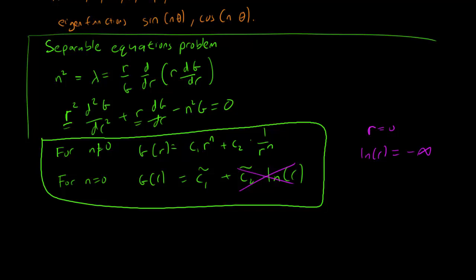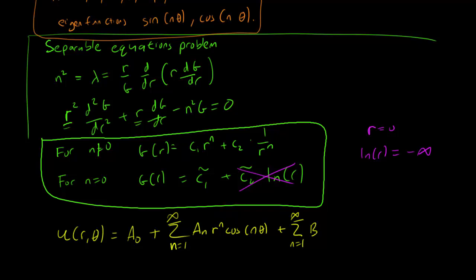So given we have these solutions for g, and these solutions for f, we can now list down all the product solutions. And it turns out that our solution, u(r,theta), is going to be of the form a0 plus the sum from n equals 1 to infinity of an r^n cos(n theta), plus the sum from n equals 1 to infinity of bn r^n sin(n theta).